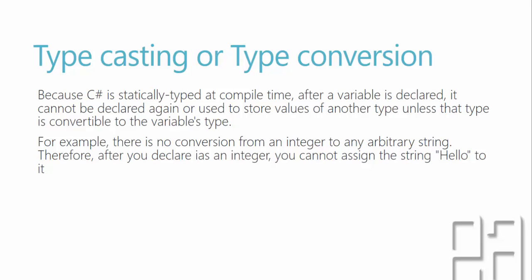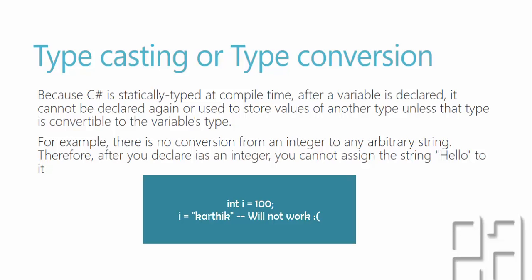For example, there is no conversion from an integer to any arbitrary string. Therefore, after you declare 'i' as an integer, you cannot assign the string 'hello' to it. If you declare int i = 100 and then try to assign i = 'Karthik', it won't work because i is an integer — you cannot assign a string value to it.